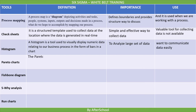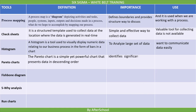The fourth tool is Pareto Charts. The Pareto Chart is a simple yet powerful chart that presents data in a descending order. It is important because it helps us by identifying the most significant potential root causes of problems. Pareto Charts are useful when analyzing frequency data relating to problems, causes, or categories in a process.